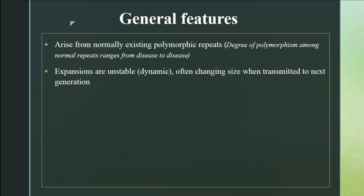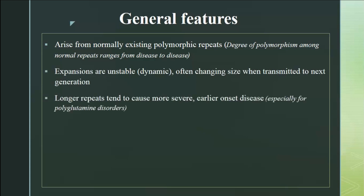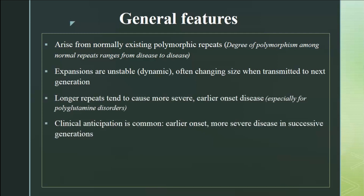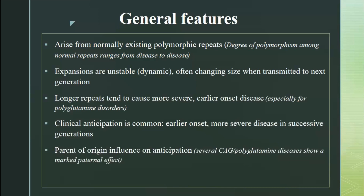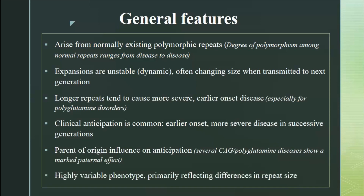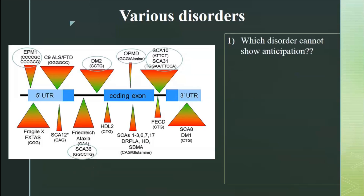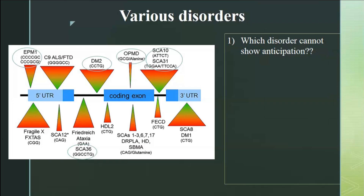Overall general features of repeat disorders: they arise from normal existing polymorphic repeats — they are pathological expansions of those repeats. They are dynamic in nature, transmitted with change in size from one generation to another. Longer repeats cause more severe and earlier onset, especially in polyglutamine disorders. Clinical anticipation is common. Parent of origin has an influence on anticipation. There is a highly variable phenotype because of differences in repeat size in different tissues.